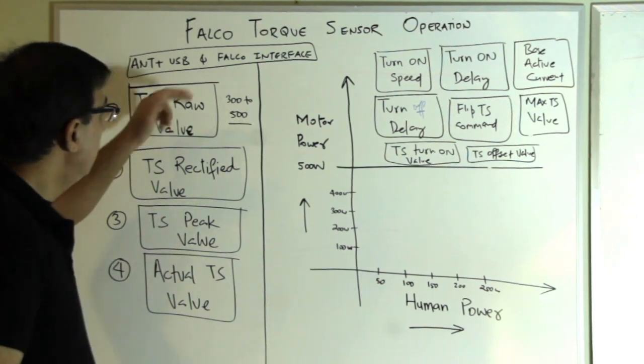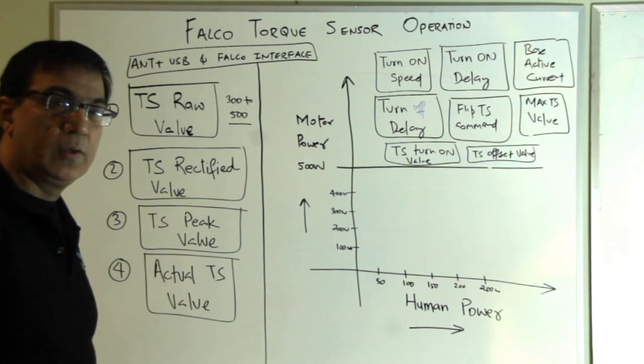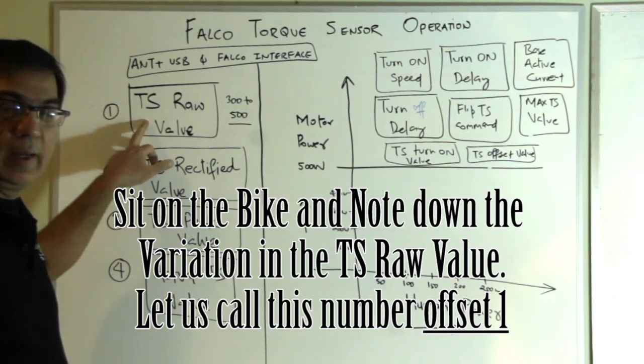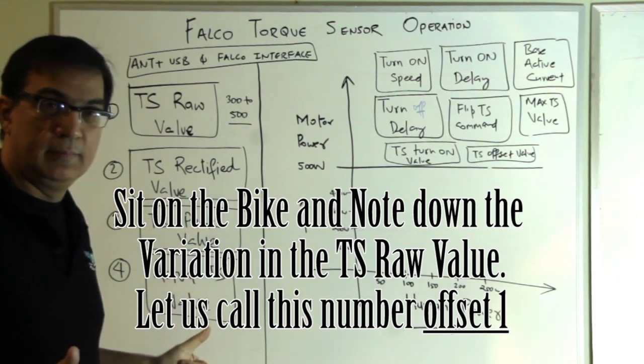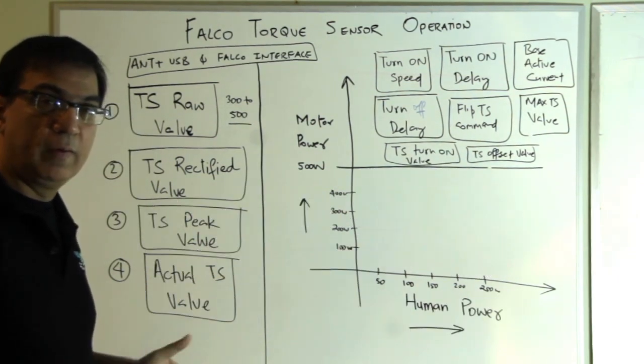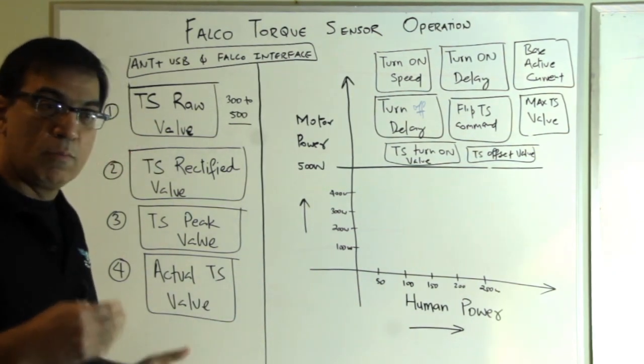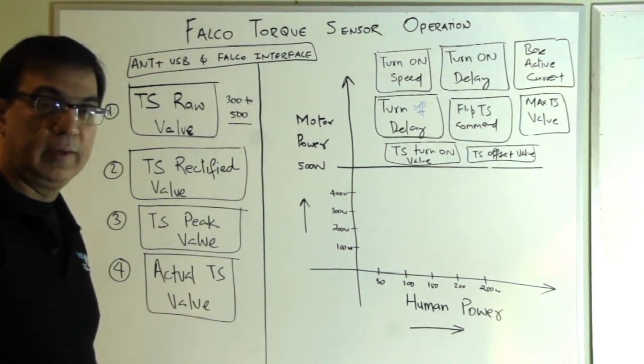If you have connected the Falco interface with your Falco system, you want to sit on the bike and see the variation in the TS raw value. If there's no variation, it's great. That means that the motor is very close to calibrated value in the frame.